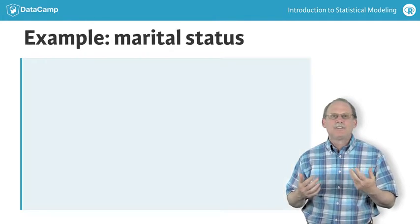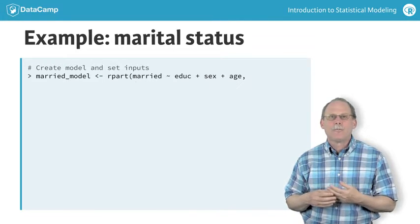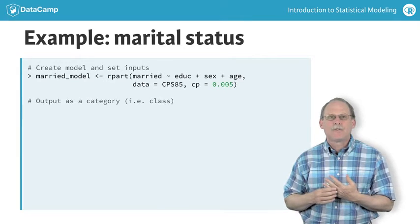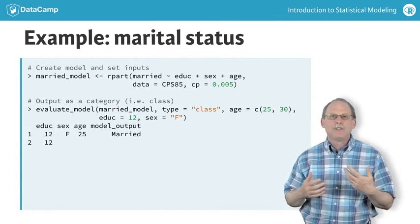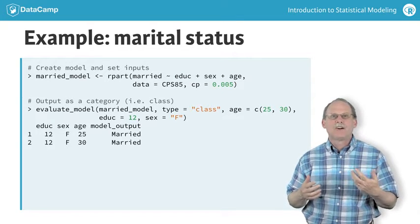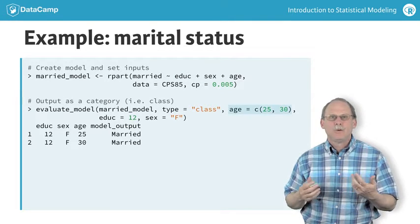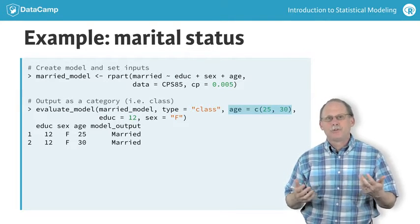As an example, consider a model of the categorical variable married as a function of explanatory variables like age, education, and sex. As always, we need to have a model from which to calculate the effect size. We'll compare the model output for two different ages.